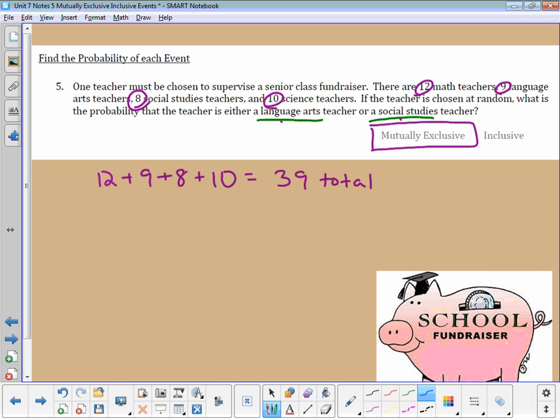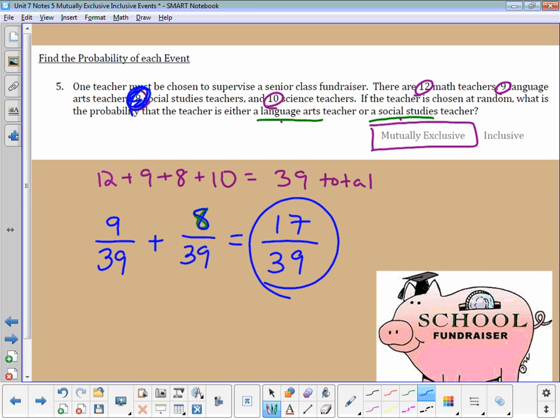In this case, I'm thinking mutually exclusive, and I need to find the probability of them both added together. There are 9 language arts teachers, so that's 9 out of 39. And there are 8 social studies teachers, so that's 8 out of 39. So I've got 9 plus 8, which is 17 out of 39. If we could reduce that we would, or you could make it a decimal, but you can leave it like that.